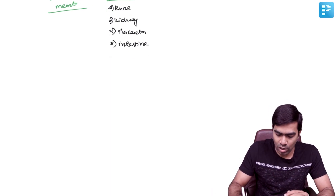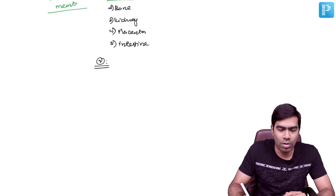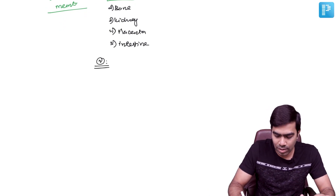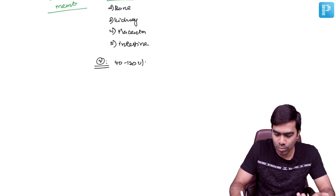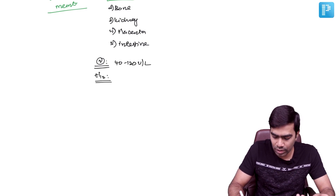The normal value of alkaline phosphatase is somewhere around 40 to 120 units per liter, and the half-life of alkaline phosphatase is somewhere around 48 to 72 hours, that is 2 to 3 days.